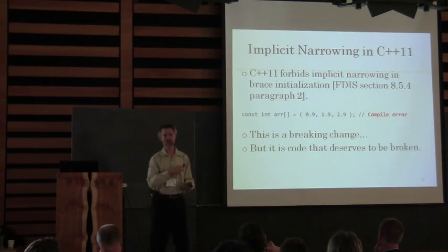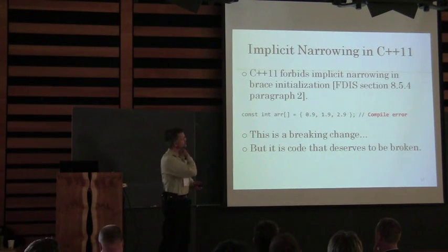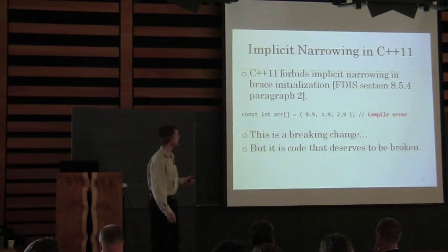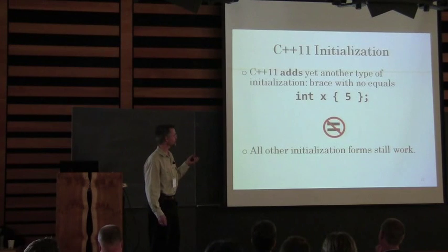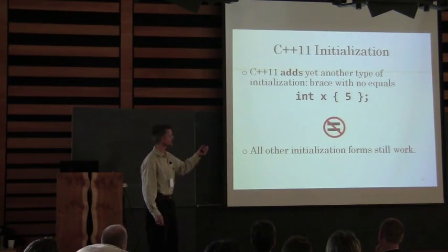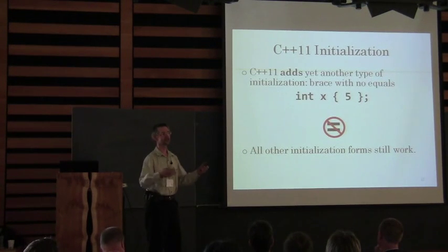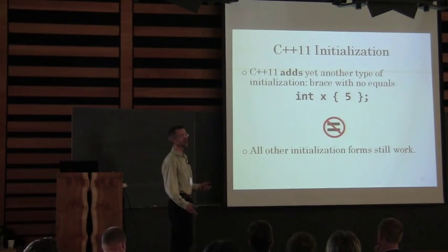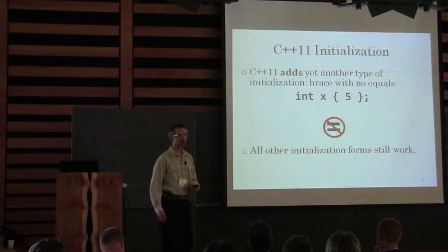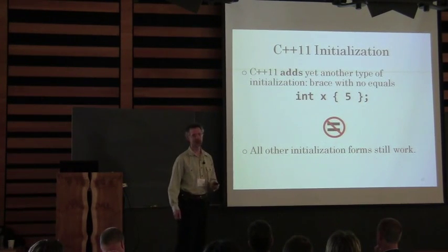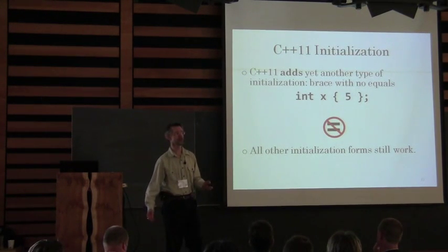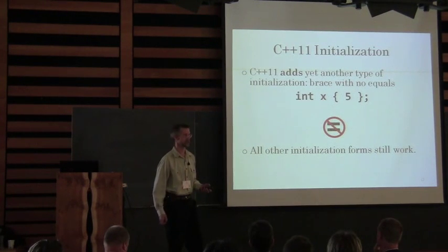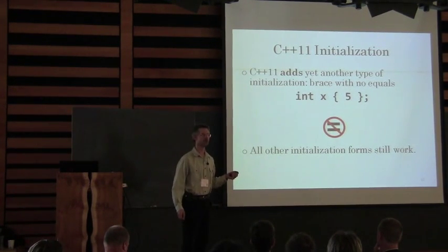In C++11, narrowing is explicitly disallowed by the standard. C++11 was thrashing about: how are we going to change initialization? How can we make this more uniform? We do initialization with parentheses without an equal sign, but the braces always required an equal sign. Why don't we just pluck that equal sign out? It's a brand new thing — not a very big textual change, but it makes a big difference in the behavior of the compiler on the initialization.